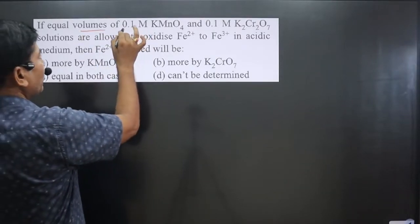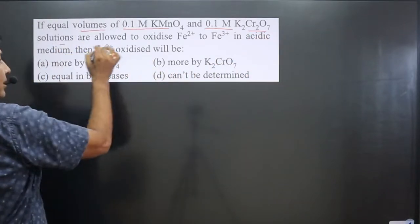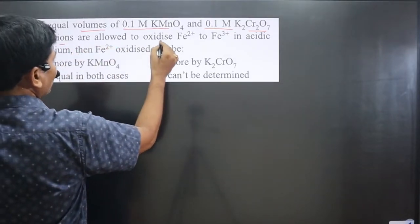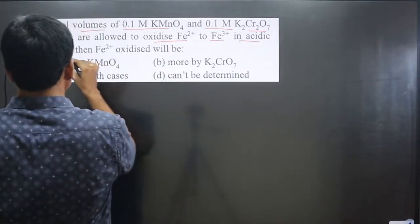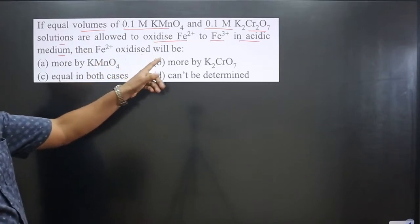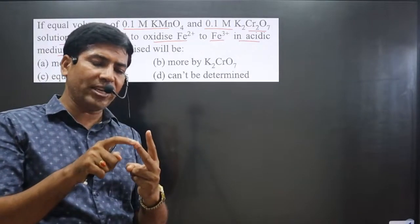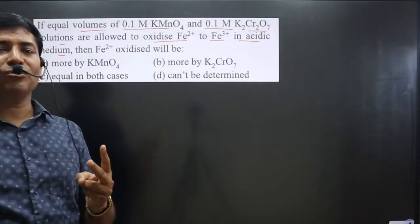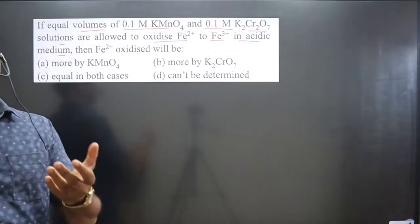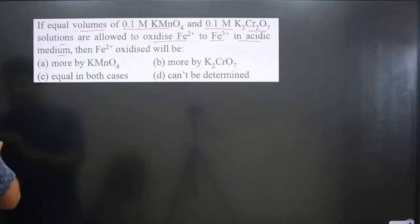The question says: if equal volumes of 0.1 molar KMnO₄ and 0.1 molar K₂Cr₂O₇ solutions — both are strong oxidizing agents — are allowed to oxidize ferrous iron (Fe²⁺) into ferric iron (Fe³⁺) in acidic medium, which oxidizes more? We write the two chemical reactions separately, calculate the moles of Fe²⁺ in each, and compare.